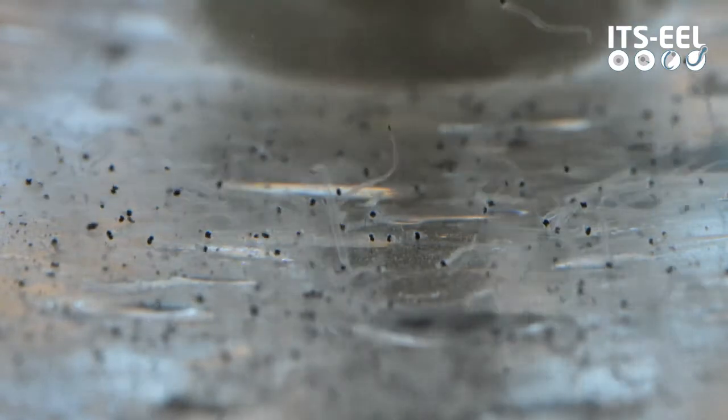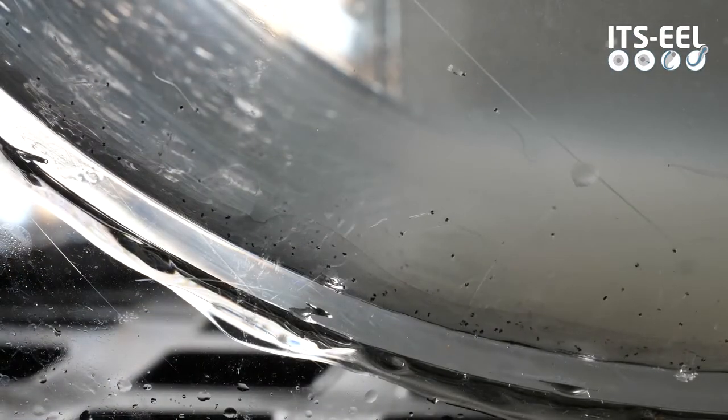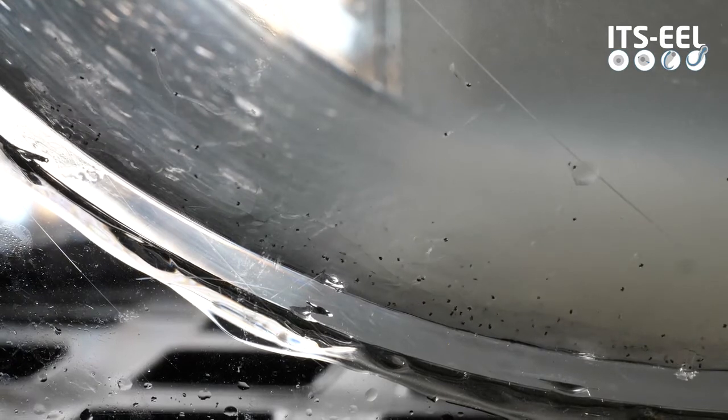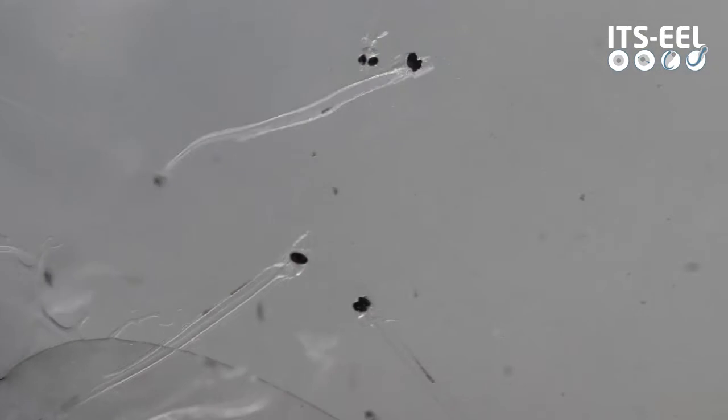When the larvae reach the feeding stage around two weeks old, customized feeds are added multiple times a day to specially designed rearing tanks. Here, the larvae eat and assimilate the food as it passes through the digestive system. During feeding, the ingested food is clearly visible through the transparent body of eel larvae.